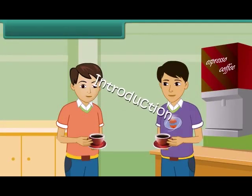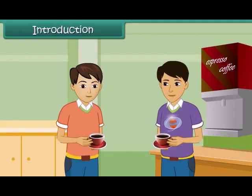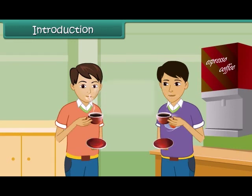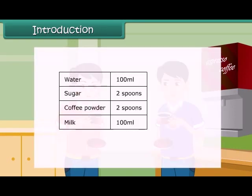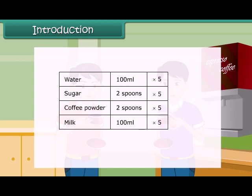Introduction: Michael prepares coffee for himself and his friend. He uses 100 milliliters of water, two spoons of sugar, two spoons of coffee powder, and 100 milliliters of milk. How much quantity of each item will he need if he has to make coffee for ten people? If each ingredient is multiplied by five, then he can prepare coffee for ten people.